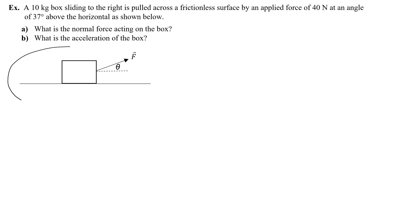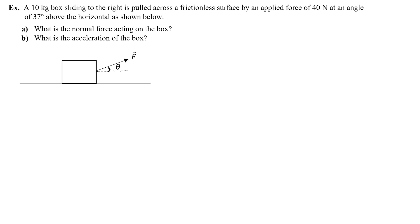This is a typical drawing of what it looks like for an angle to be above the horizontal — the angle is above a horizontal line. I'm going to draw a free body diagram of everything acting on the box. I'll draw a dot representing the center of mass of the box, then redraw that applied force up at an angle, and label it as the applied force F.